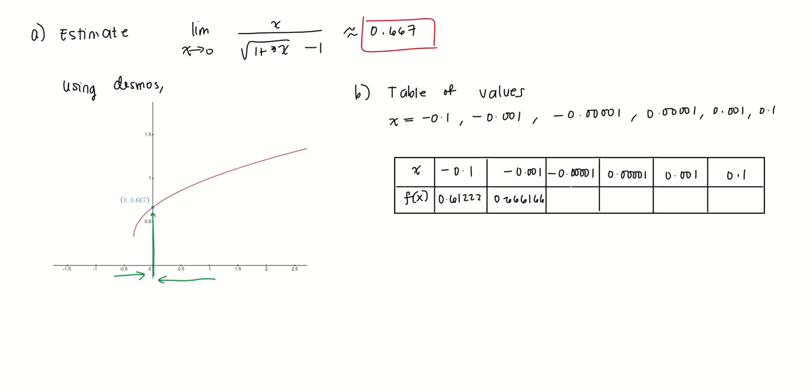For positive 0.00001, the value is approximately 0.66667. For 0.001, we have 0.6672, and for 0.1, we have 0.71339.